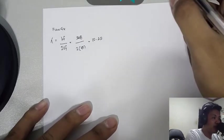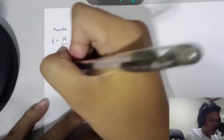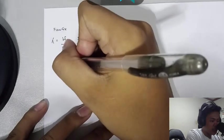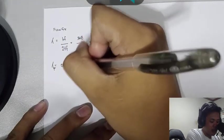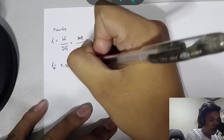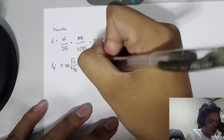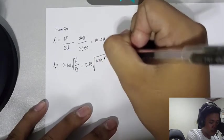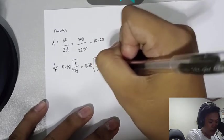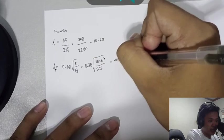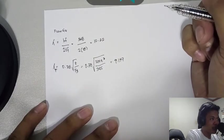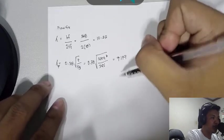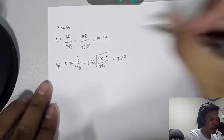From NSCP, we'll use Lambda P is equals to 0.38 multiplied by square root of E over FY. Direct substitution: 0.38 times square root of 200,000 over 345 equals to 9.149. As we can see here, our width to thickness ratio is larger than the limit Lambda P.